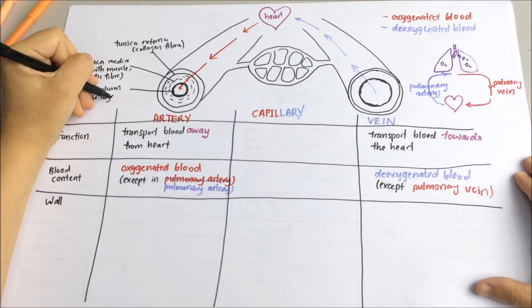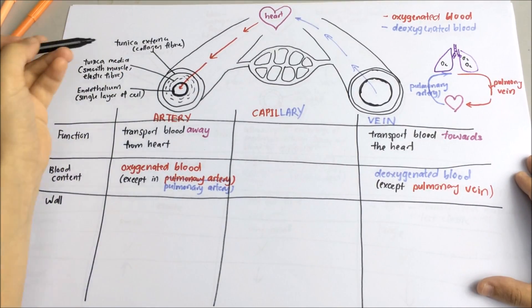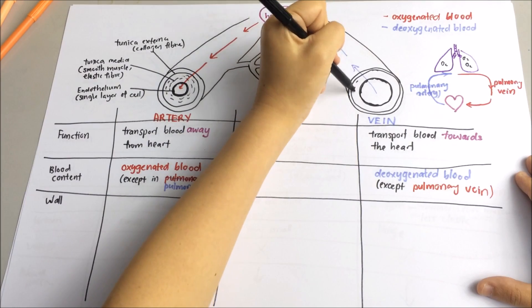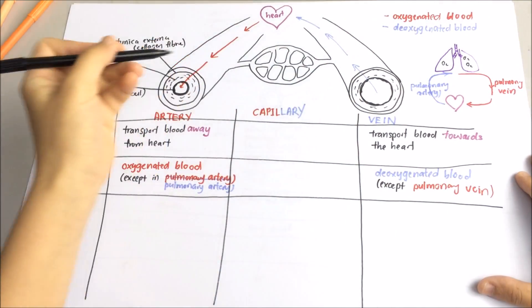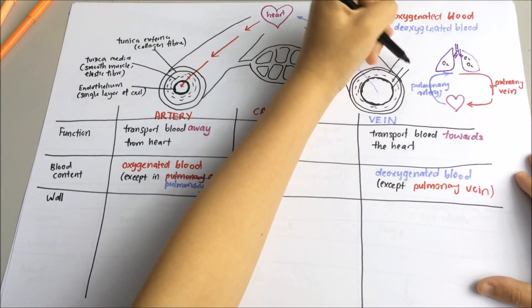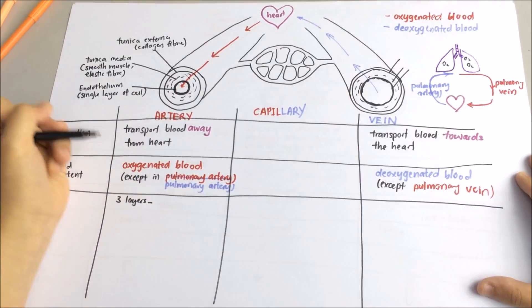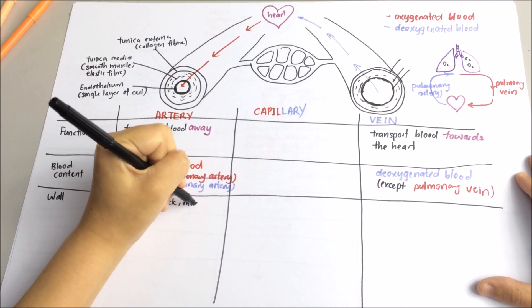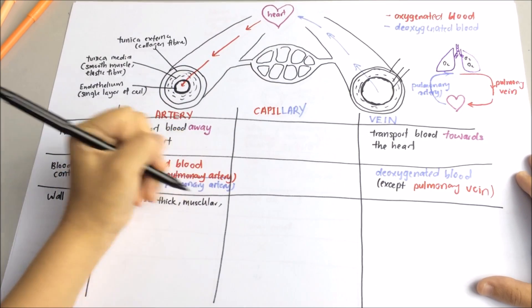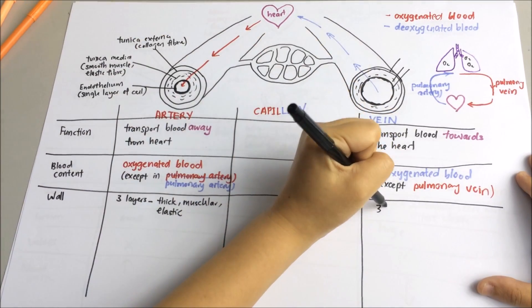The blood in the arteries is under high pressure generated by the heart because blood needs to be pumped into the rest of the body. So the arteries have thicker outer walls and thicker layers of muscles and elastic fibers. So artery is thick, muscular and more elastic.